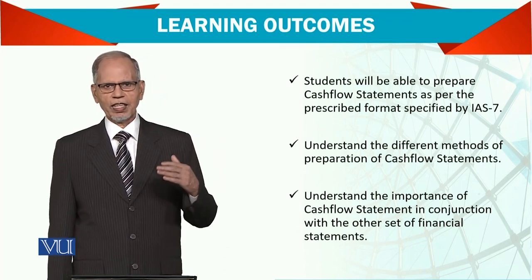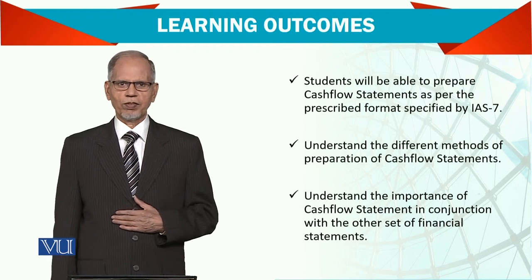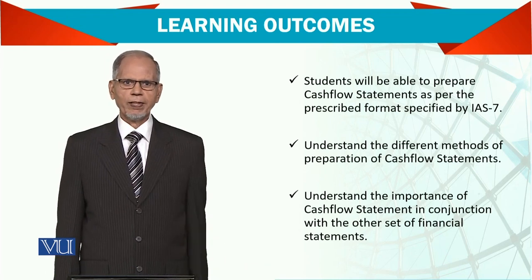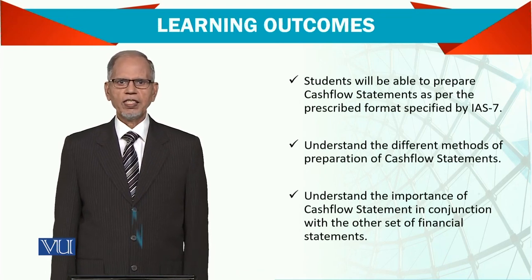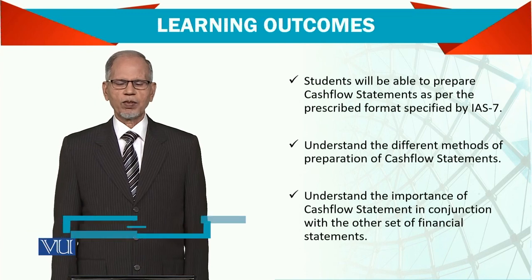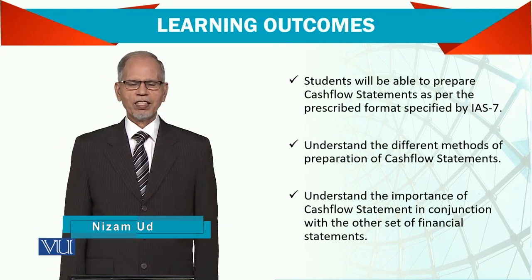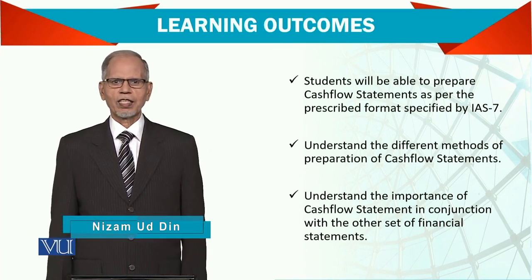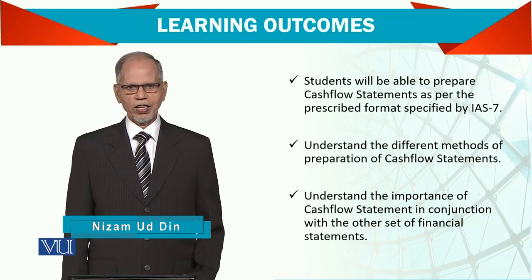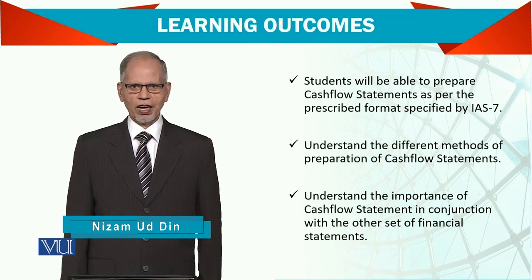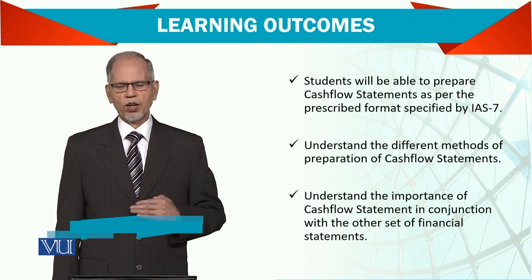The format specifies that there are three activities we have to account for. Number one is operating activities, number two is investing activities, and number three is financing activities. All three activities are reported in a certain order.